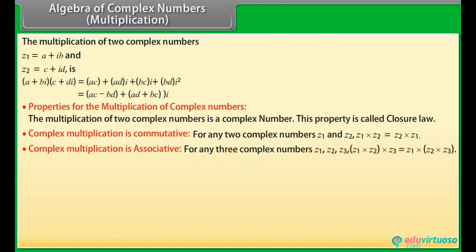Complex multiplication is associative: for any three complex numbers Z1, Z2, Z3, Z1 into (Z2 into Z3) equals (Z1 into Z2) into Z3.